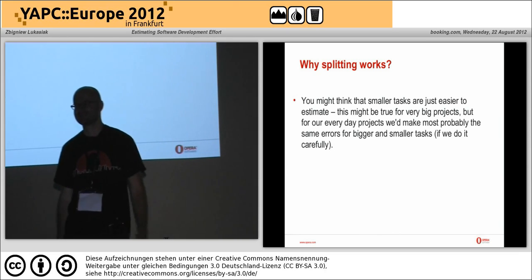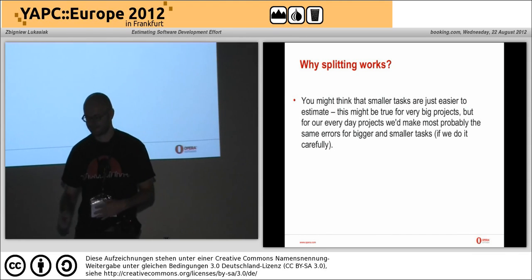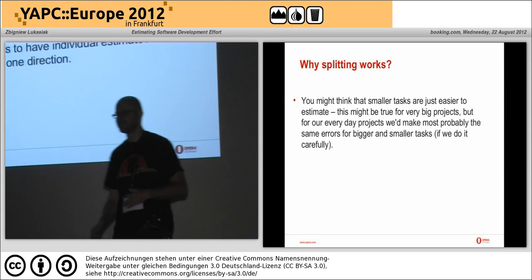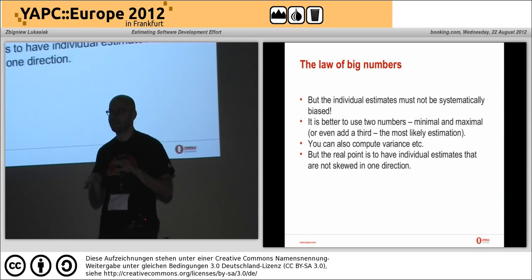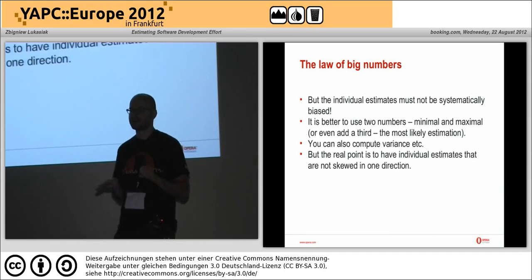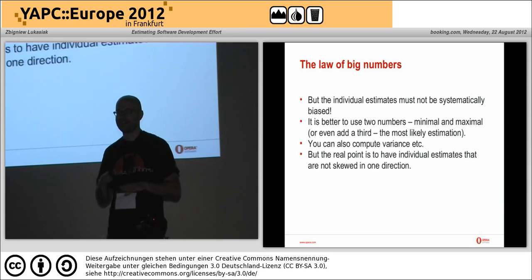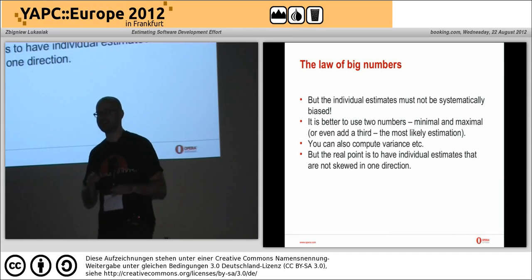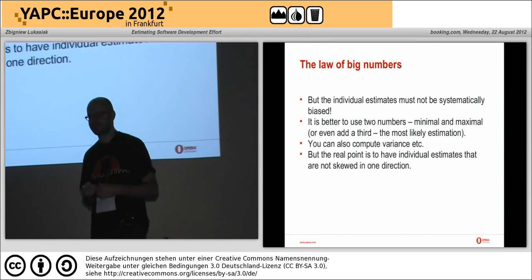There's also the idea that errors will cancel each other out - that's the law of large numbers. It works when individual estimates don't all have errors in the same direction. But if your estimates are systematically biased - always underestimation - it won't work, because the errors will add up and you'll end up worse than estimating the whole project at once.